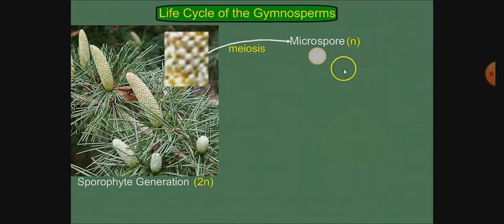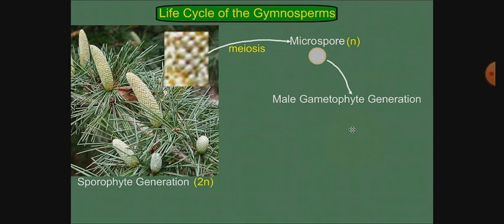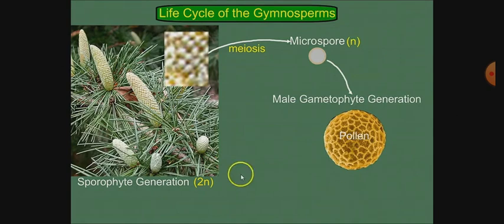So the spore mother cell is diploid. After meiosis, it becomes a microspore. This microspore is called the male gametophyte. The male gametophyte starts to develop into a plant body. The pollen grain is called the male gametophyte, so this microspore is called pollen.